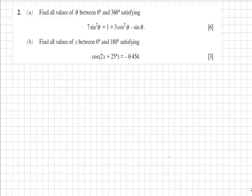In question 2b we are asked to solve the equation cos 2x plus 25 equals minus 0.454 between 0 and 180 degrees.